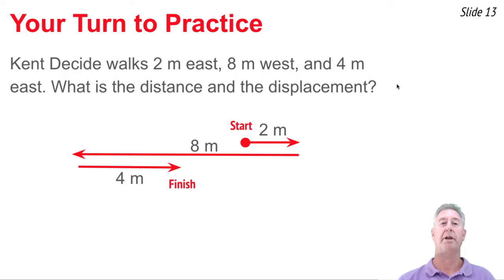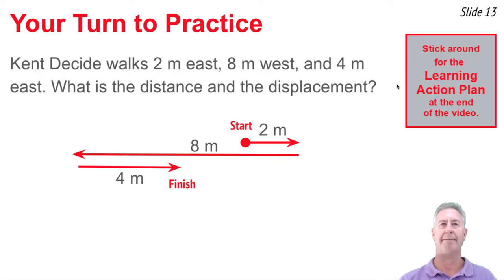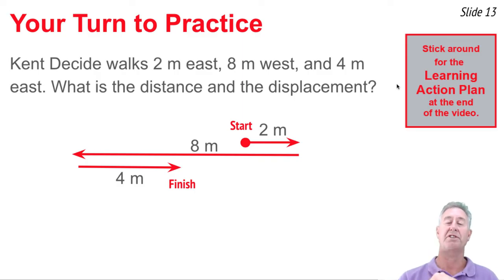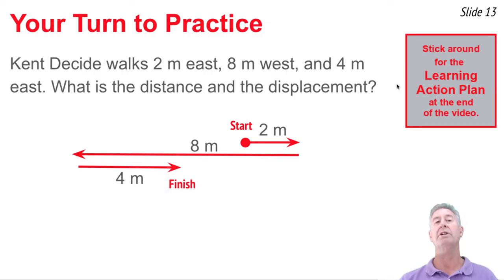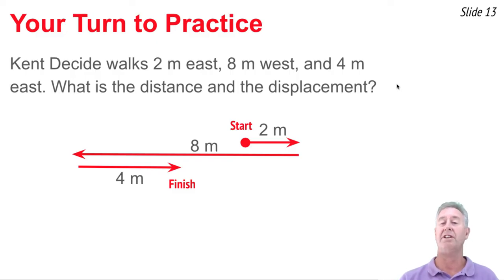Here's my diagram for this problem. I have a starting point and I'm drawing out the various legs of this multi-leg trip: 2 meters to the east drawn to the right, then 8 meters to the west drawn to the left, then 4 meters back to the east. For a distance calculation on a multi-leg trip, you simply add up all the distances of the legs of the trip: 2 plus 8 plus 4 equals 14 meters as the distance traveled. I do not need to indicate a direction because distance is a scalar and doesn't regard direction.